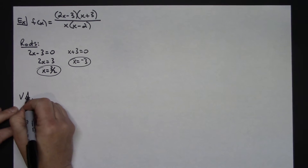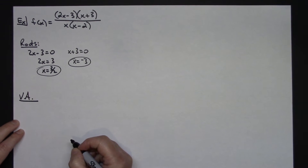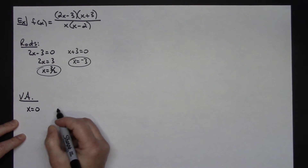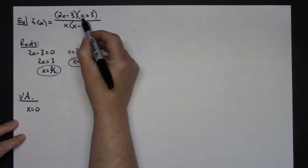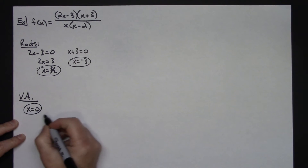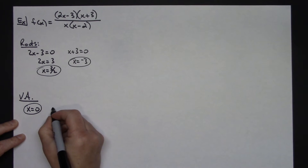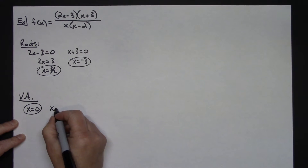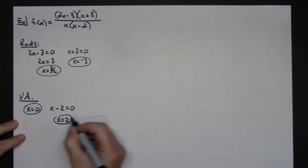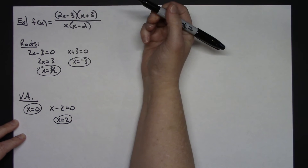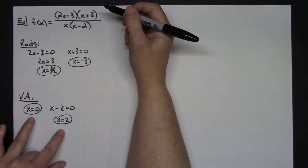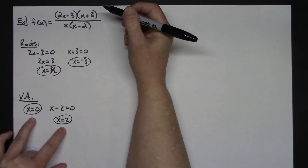Now to find my vertical asymptotes, I'm going to take the denominator factors and set them equal to zero. Setting x equal to zero — checking back in the numerators, I will not get a zero in any of those cases, so I'm good there. Taking the other factor, x minus 2 equals zero, add 2 to both sides, I get x equals 2. Checking in the numerators, I am not going to get a zero in either one of those. So my two vertical asymptotes are x equals 0 and x equals 2.